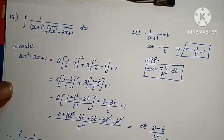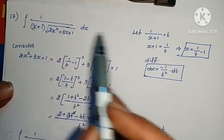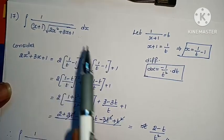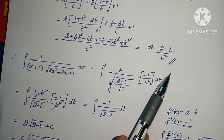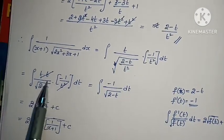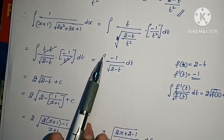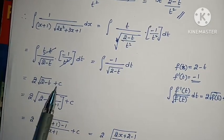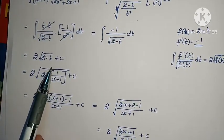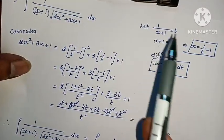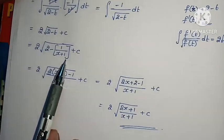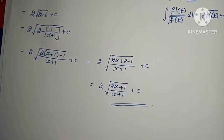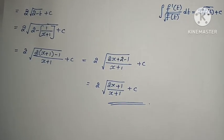The same model is used here: differentiate 1 by (x plus 1), convert 2x squared plus 3x plus 1 into t terms, substitute, t squared cancels, apply the integral f prime of x by root f of x equals 2 root f of x formula, substitute t as 1 by (x plus 1) back, take LCM and solve. Problem complete.